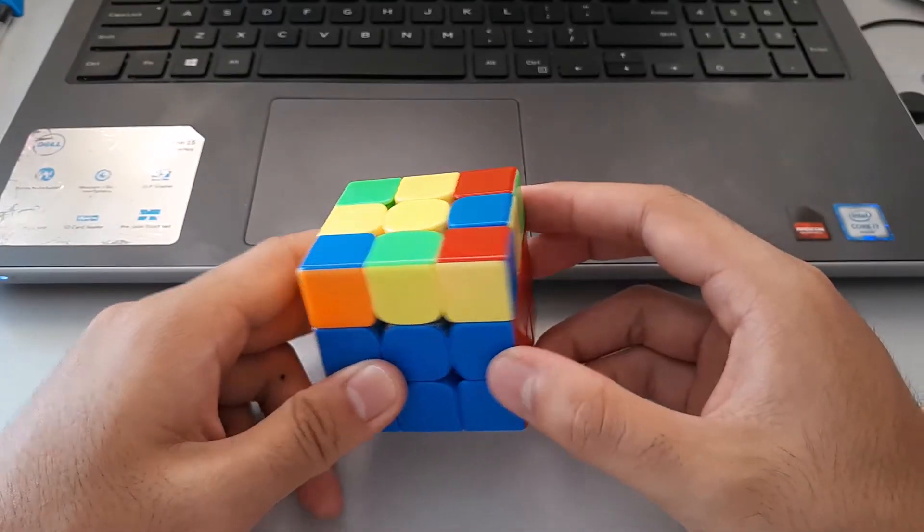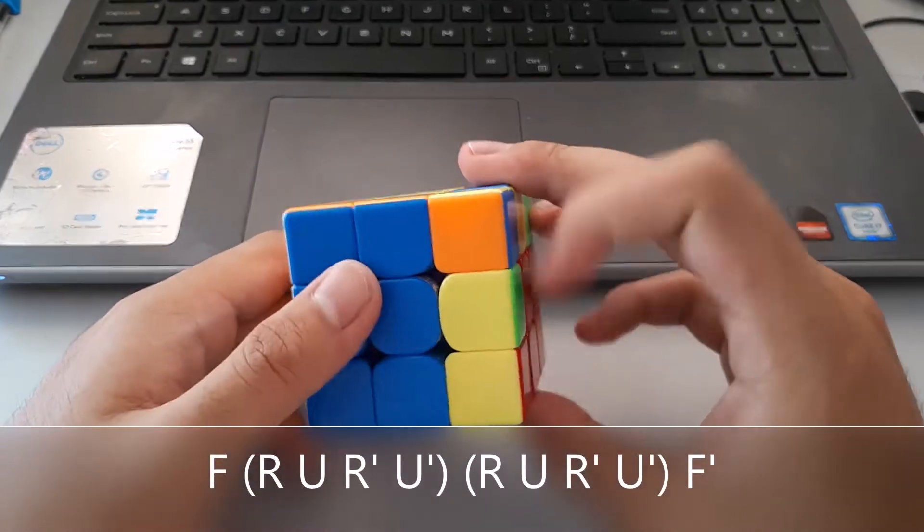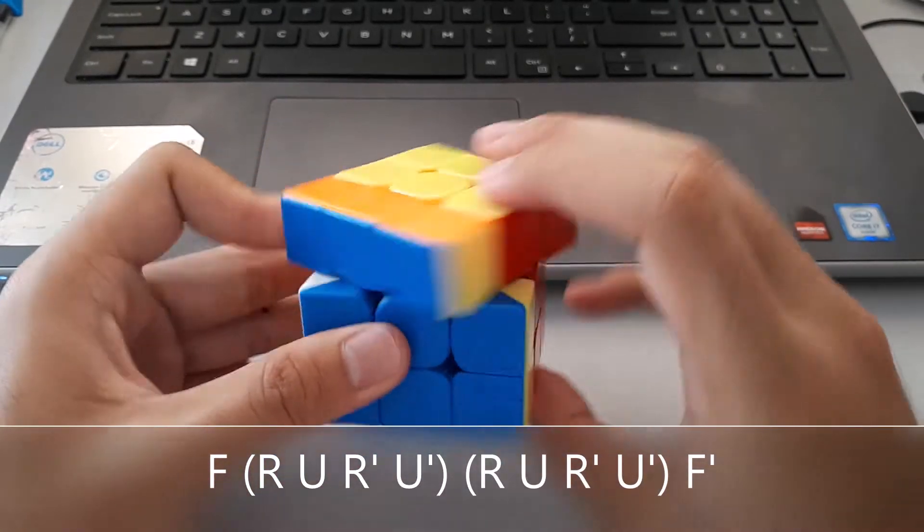This one is actually a fairly simple algorithm. It's actually F, double sexy, F prime.